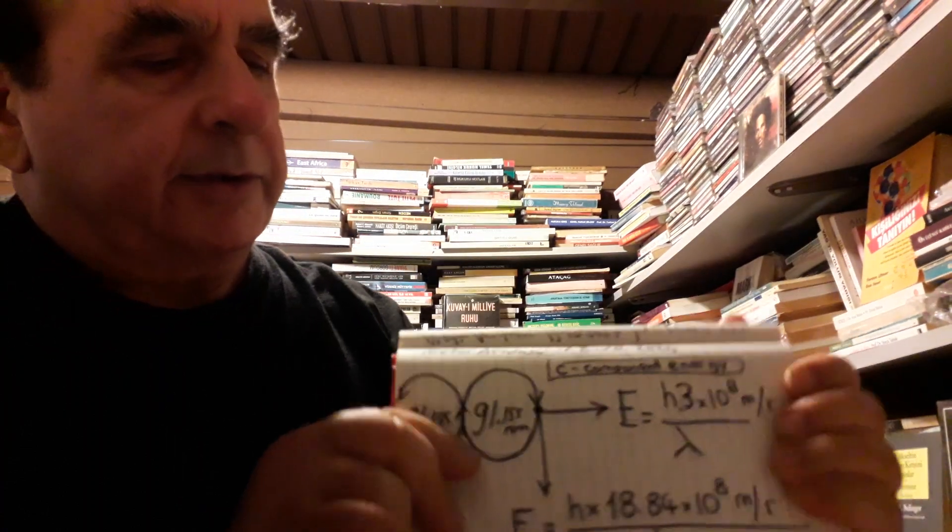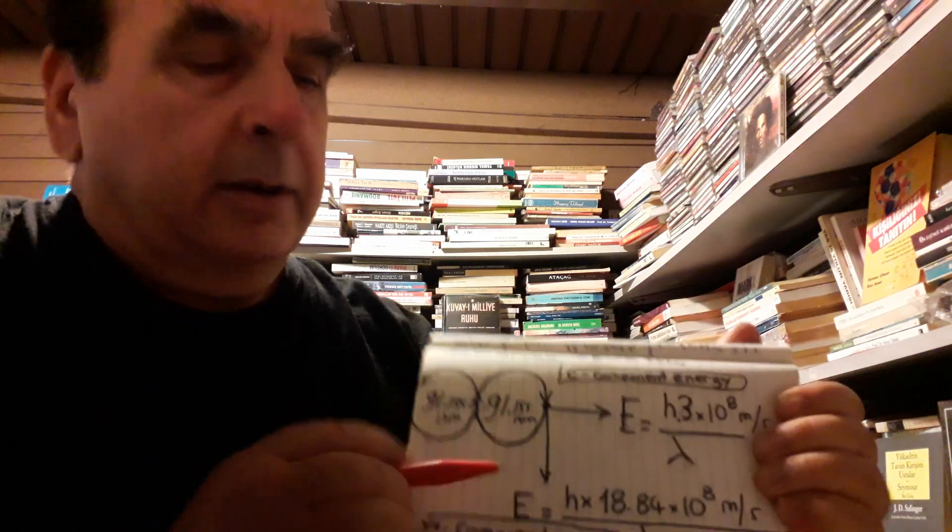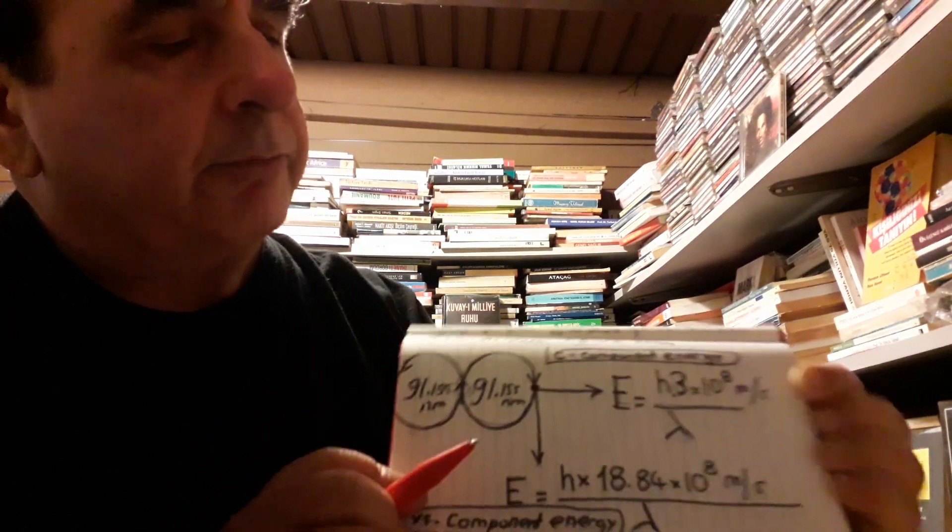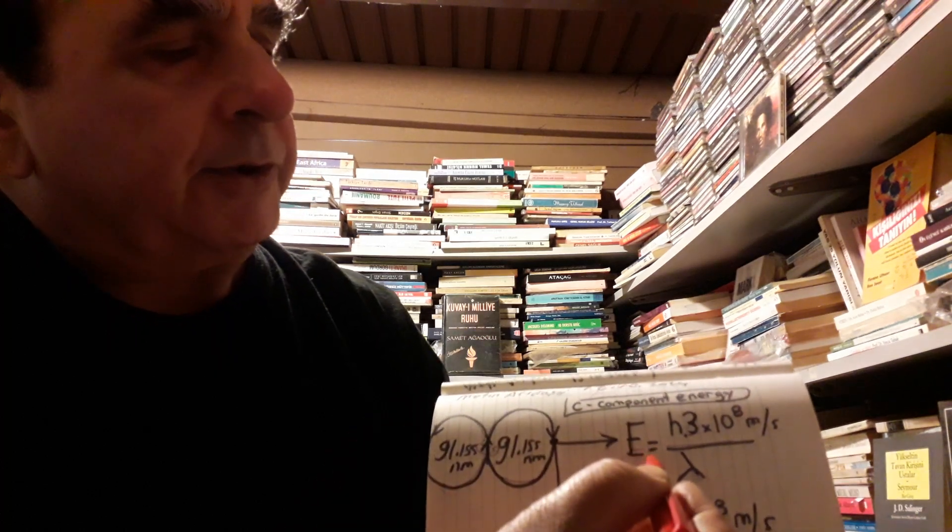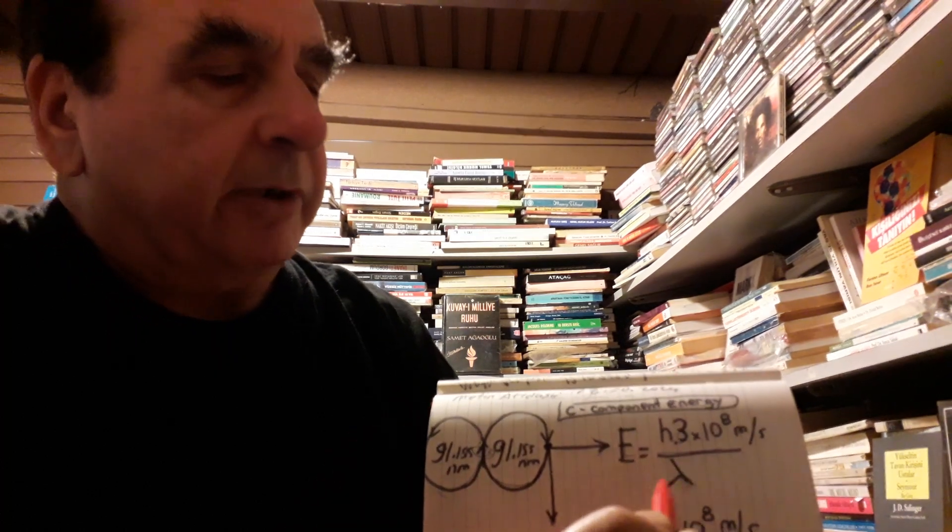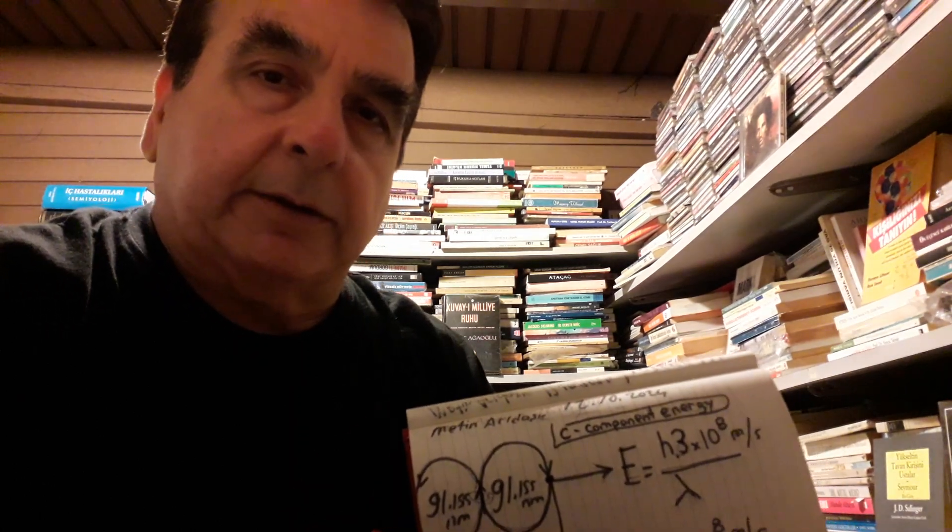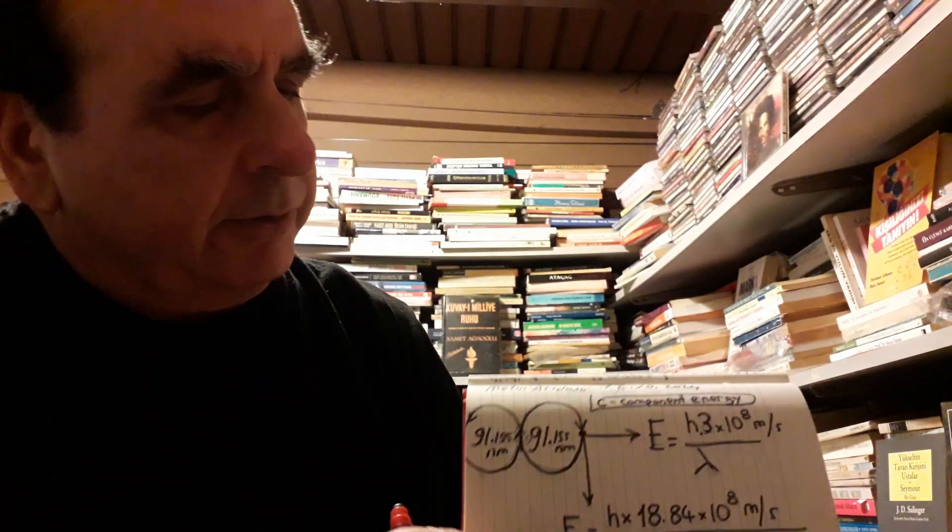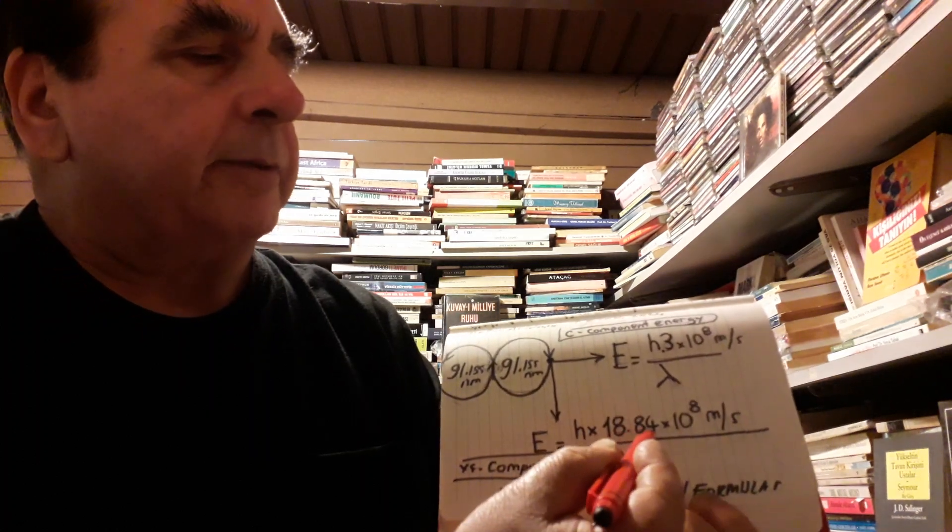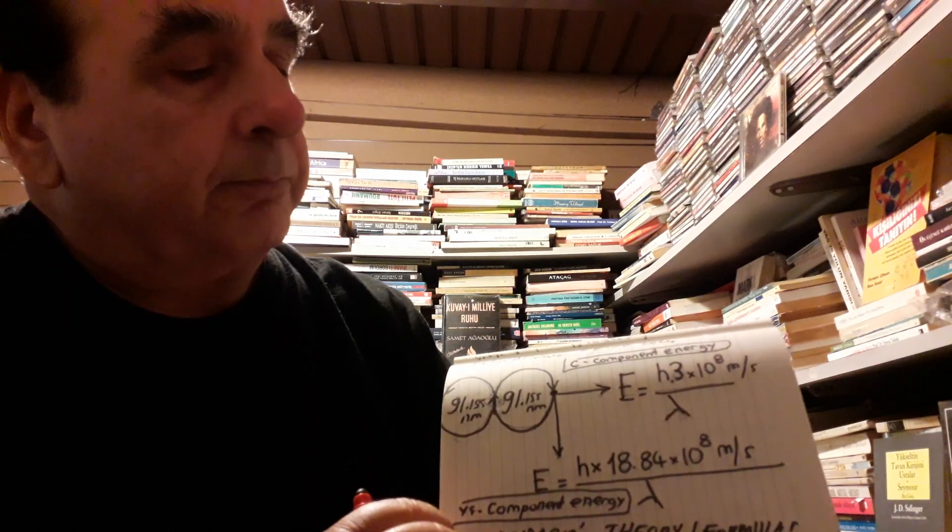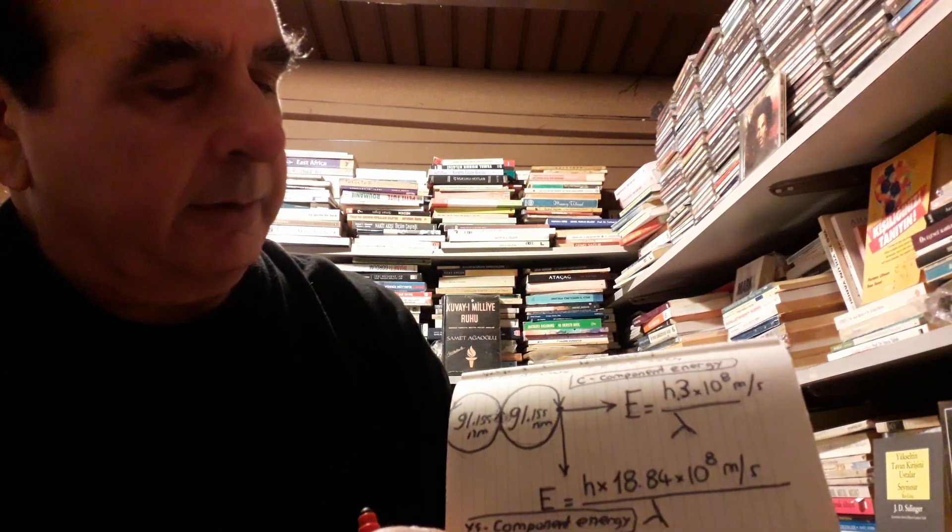Then here, this is hydrogenic electron with 91.155 nanometer wavelength. Speed of light component energy: h multiplied by speed of light divided by lambda 91.155, equals 21.8×10^-19 joules. Tangential velocity component here: Planck's constant multiplied by 18.84×10^8 meter per second divided by lambda, this component.